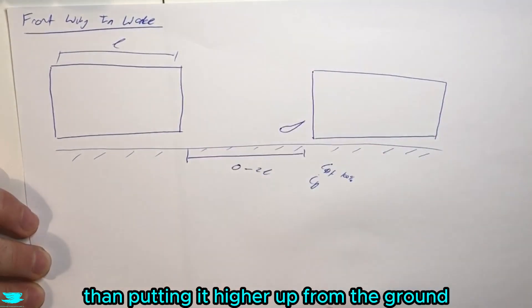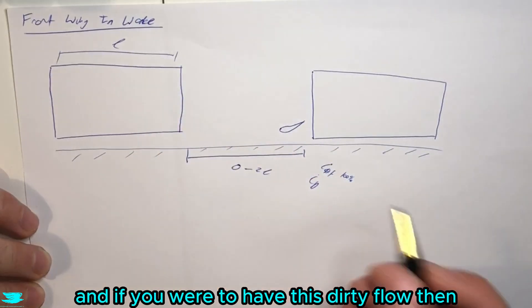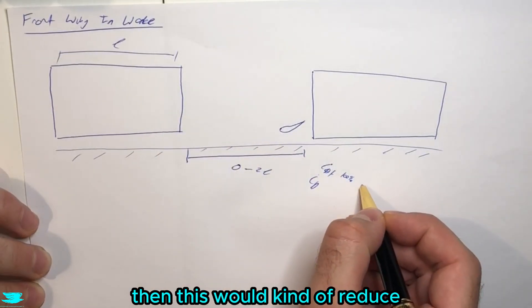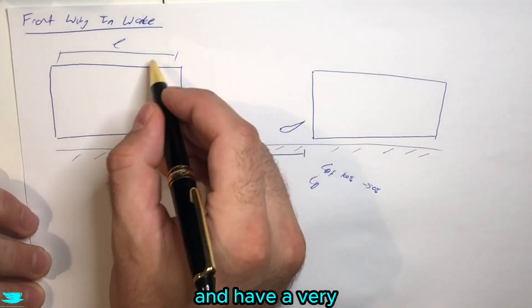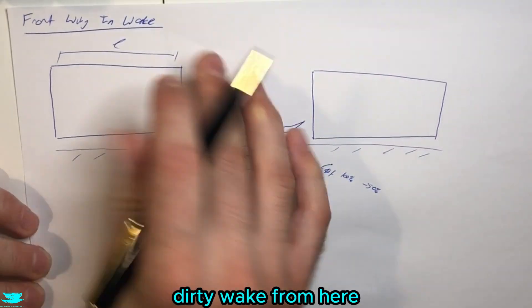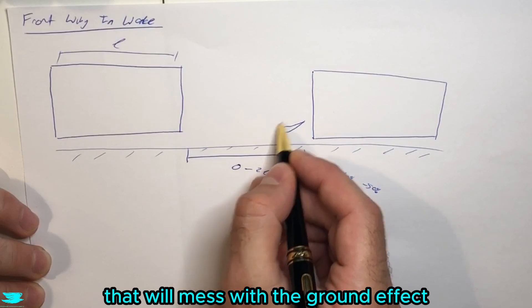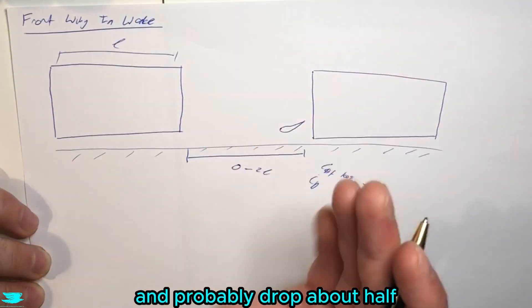If you were to have this dirty flow, then this would kind of reduce by up to about 50%. So if you put this very high and you have a very dirty wake from here, that will mess with the ground effect and probably drop it by about half of what you would usually get without having this car upstream.